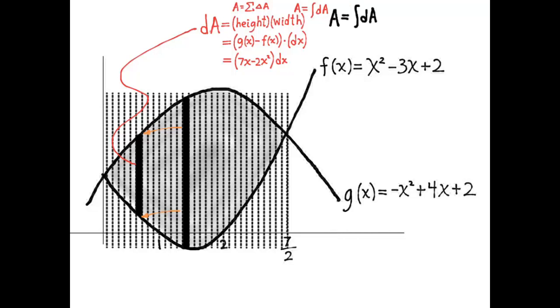So now we write our integral. A is the integral of the dAs. So it's the integral from 0 to 3.5 of 7x minus 2x squared dx. And the reason the integral goes from 0 to 3.5 is that we're stacking our rectangles from 0 to 3.5 and we're using each value of x in between.